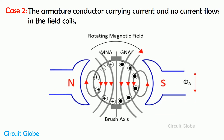Now consider the second condition in which the armature conductor carries current but no current flows through the field coil. The armature conductor is carrying current — the plus sign shows current flowing inward and the dot sign shows current moving out of the conductor. The only flux present in the DC generator is because of the armature conductor.